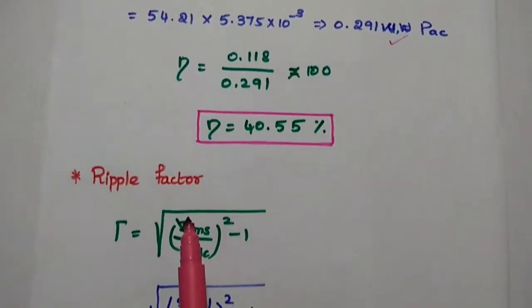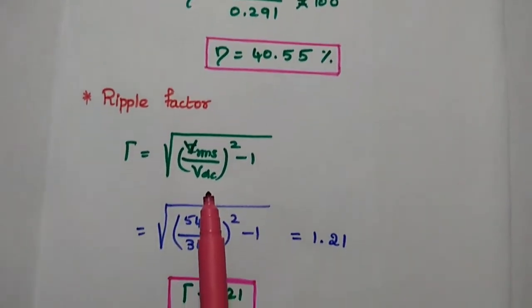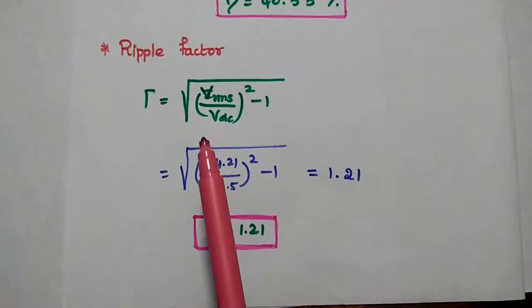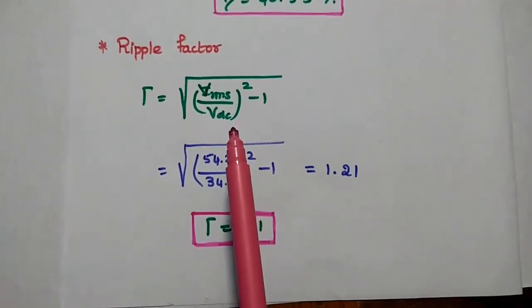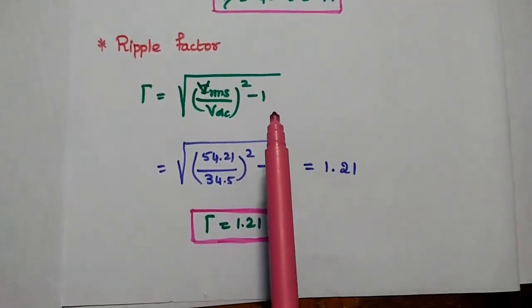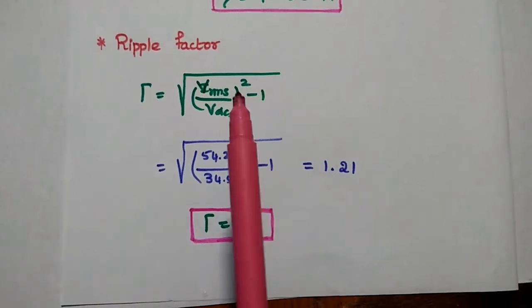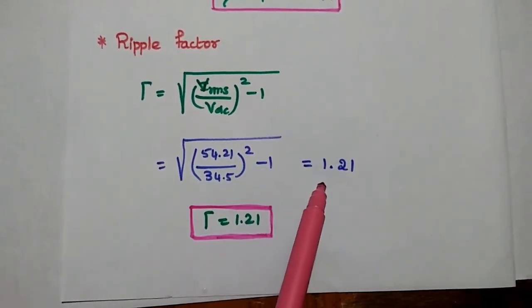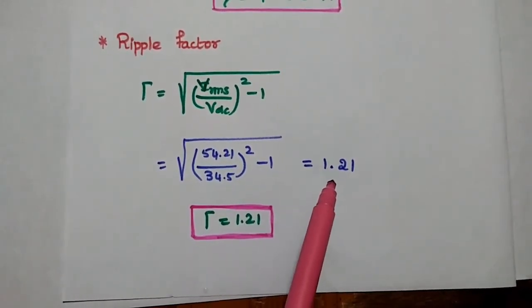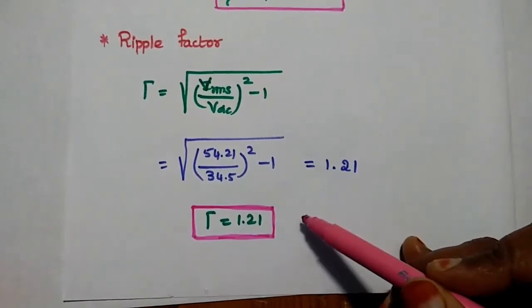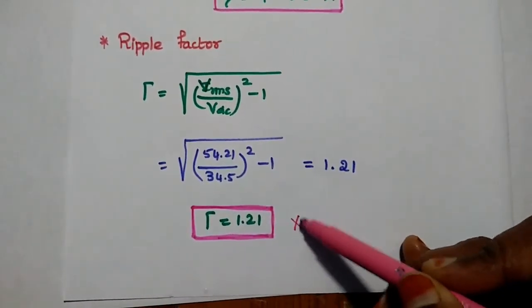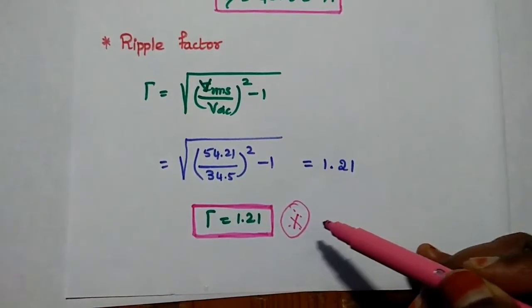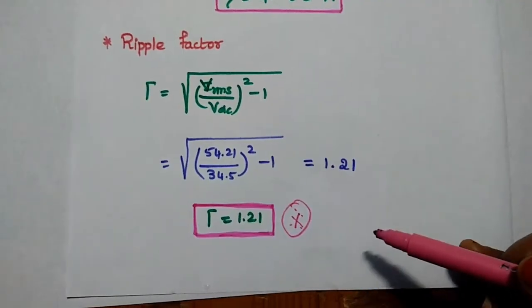The ripple factor is calculated using √((Vrms/Vdc)² − 1), substituting the values gives 1.21. The ripple factor for a half wave rectifier is always 1.21.